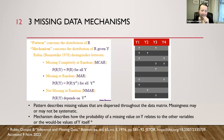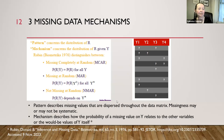Not missing at random, NMAR, is when the probability of missingness depends on the missing values themselves — on the values that would have been otherwise recorded. For example, if smokers are less likely to report that they are smokers, that's NMAR. All this theory is due to Donald Rubin, who was head of the Department of Statistics at MIT and wrote the foundational paper on inference and missing data.